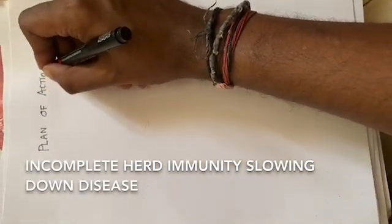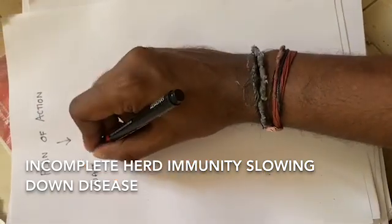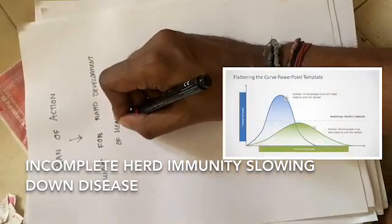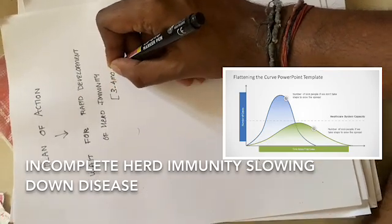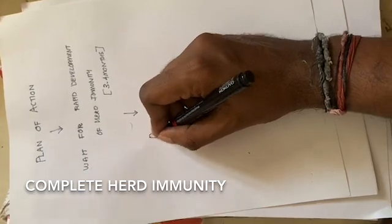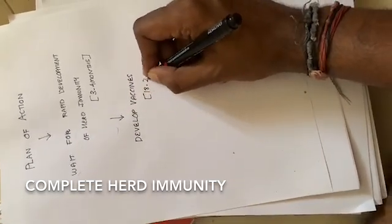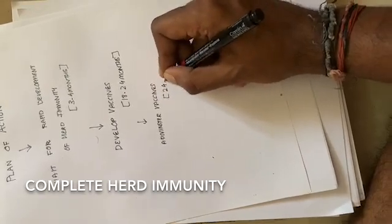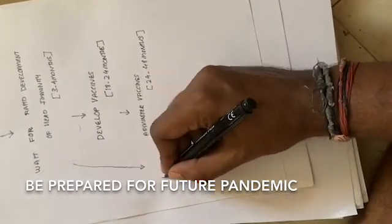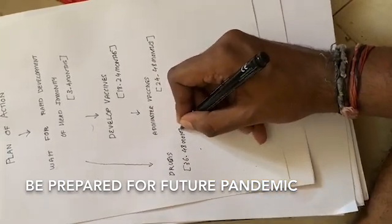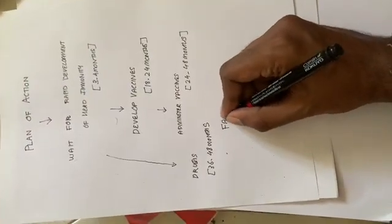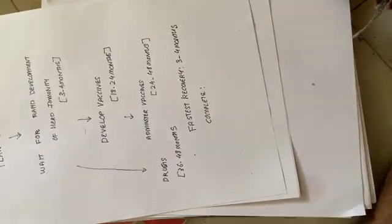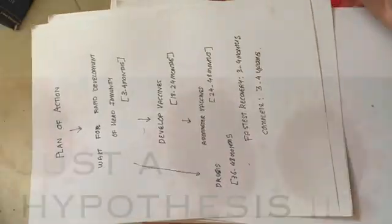So now, what is our plan of action? First, we wait for 3-4 months, practice our social distancing, and we hope that we develop a sufficiently protective but an incomplete herd immunity secondary to a subclinical infection. Now this slows down the disease thereby flattening the curve. Next what happens? We develop vaccines. Developing a vaccine can take anywhere between 18-24 months. Now it has to go into manufacturing and then it has to be given to all the people. That would take 24-48 months. We have to develop the drugs side by side. This is to be prepared for a future pandemic, not for this pandemic. So the fastest recovery time would be around 3-4 months until we develop an incomplete herd immunity. However, the complete recovery can take up to 3-4 years for us to be prepared for the next pandemic.